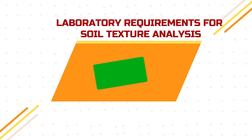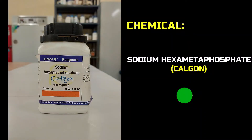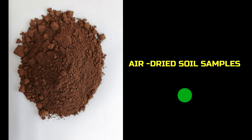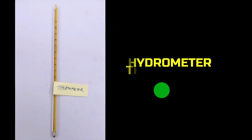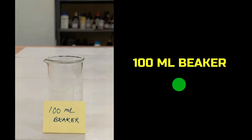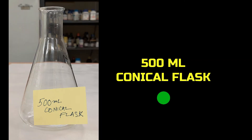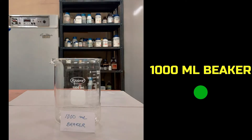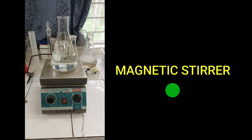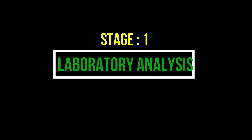To conduct this soil practical experiment, let's see the different laboratory materials, instruments, and glassware required. You need a soil dispersing reagent — sodium hexametaphosphate, trade name known as Calgon — air-dried soil samples passed through a 2 mm sieve, a soil hydrometer, a thermometer, a 100 ml beaker, a 500 ml volumetric flask, a 500 ml conical flask, 500 ml and 1000 ml measuring cylinders, a 1000 ml beaker, distilled water, and a magnetic stirrer.